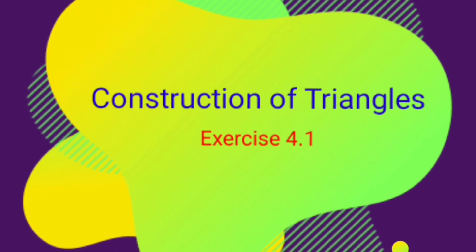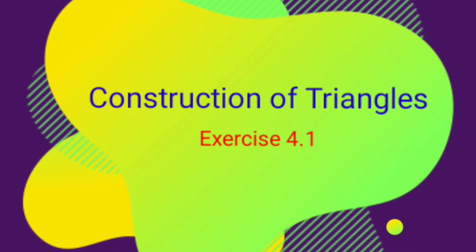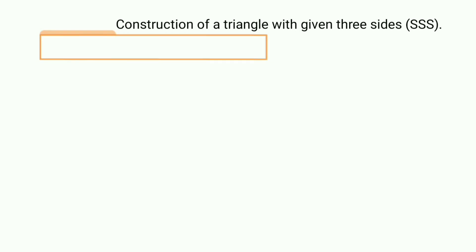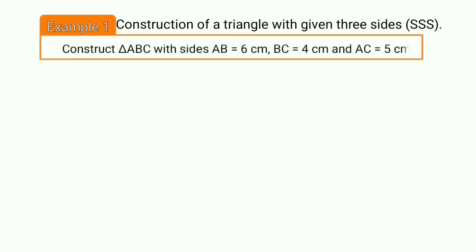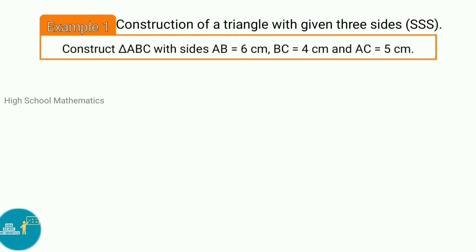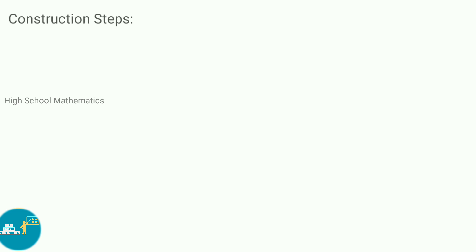Hello everyone, welcome to the High School Mathematics channel. Today we are going to learn Class 7 Semester 2, Chapter 4: Construction of Triangles, Exercise 4.1. See now construction of a triangle with given 3 sides. Example 1: Construct triangle ABC with sides AB equal to 6 cm, BC equal to 4 cm, and AC equal to 5 cm.